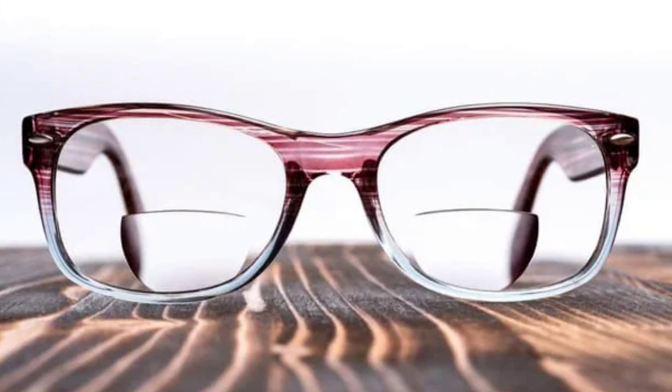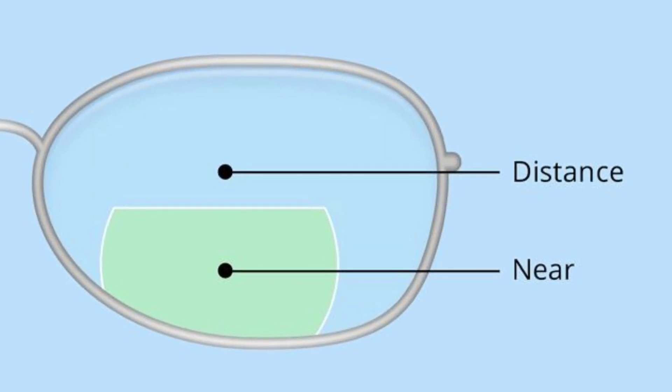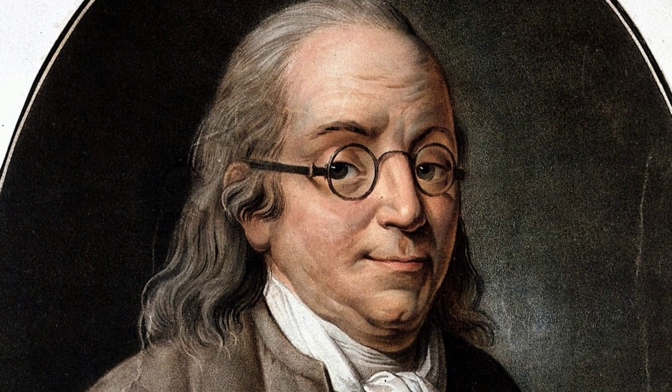Bifocals are the simplest type of multifocal lenses, with a sharp transition between those two different parts of the lens, but that can get in your way or just make you look older.